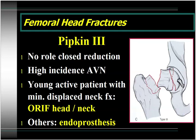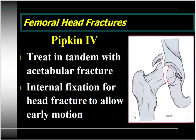Pipkin III fractures have absolutely zero role for closed reduction. These fractures have a very high incidence of avascular necrosis — a double hit to the femoral head because of disruption of the blood supply by the displaced neck fracture as well as the fracture of the head itself. If you have a young, active patient with a relatively minimally displaced neck fracture, you can consider open reduction and internal fixation of the femoral neck with anatomical reduction and fixation of the head fragment. Other patients would best be managed with prosthetic replacement of the proximal femur. Pipkin IV fractures — fractures of the femoral head associated with a posterior acetabular fracture — are treated as dictated by the acetabular fracture.